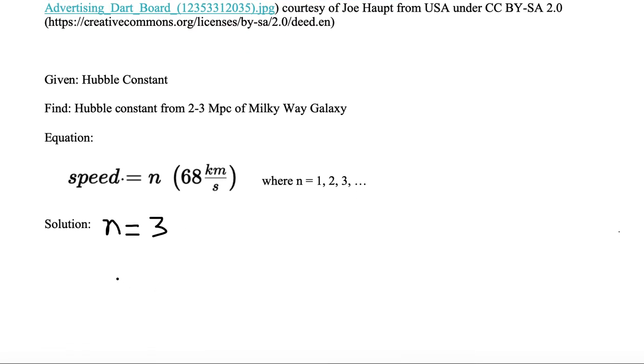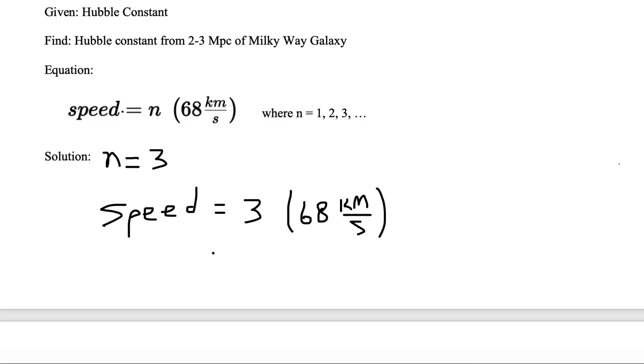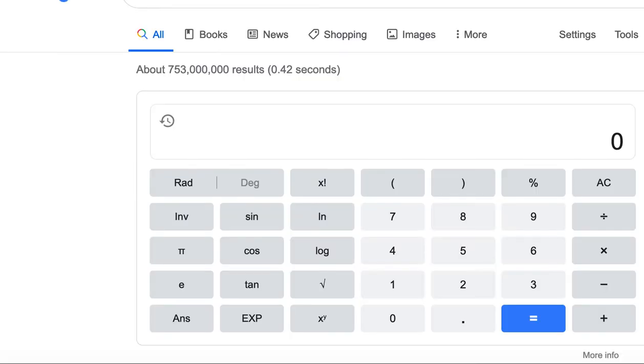So we want to find this speed, and the speed is going to be equal to n, which is 3, and we want to multiply it by 68 kilometers per second. We identified n as being 3, and all we need to do is substitute in n equal to 3 and multiply 68 by 3. So we go to our calculator on Google and we multiply 68 times 3, and we get 204 as our value.